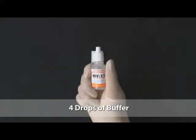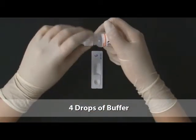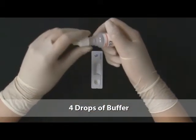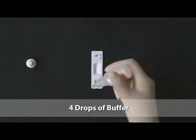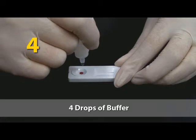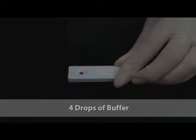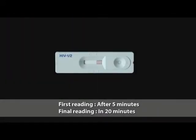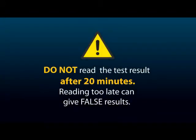Add 20 microliters of drawn blood into the round sample well, then add 4 drops of buffer into the same round well. Read the result after 5 minutes initially; for clear interpretation, read the result at 20 minutes. Do not read the test results after 20 minutes, as reading too late can give false results.